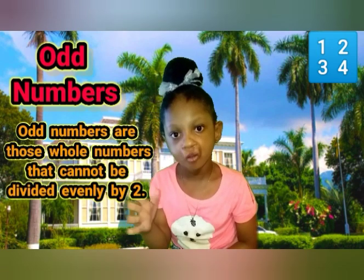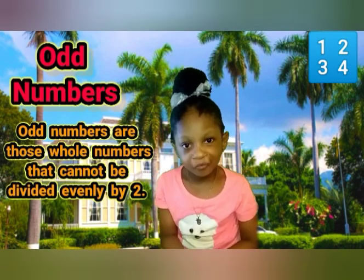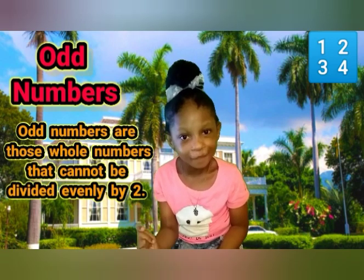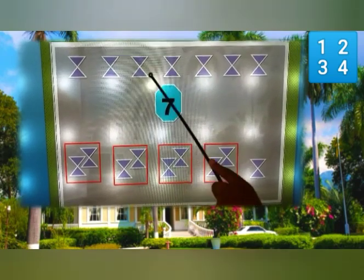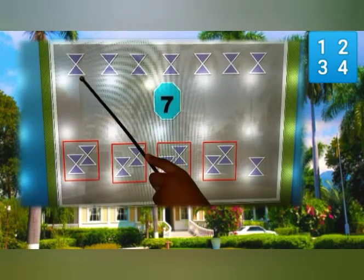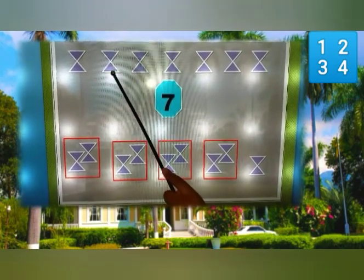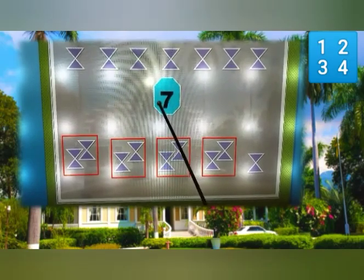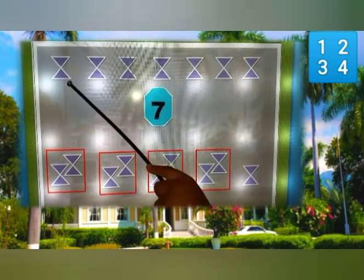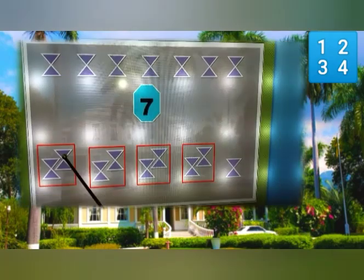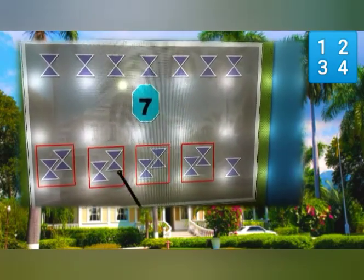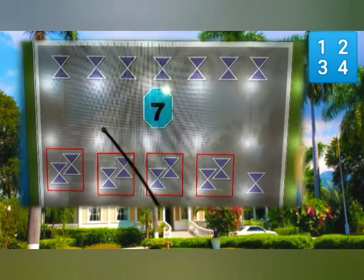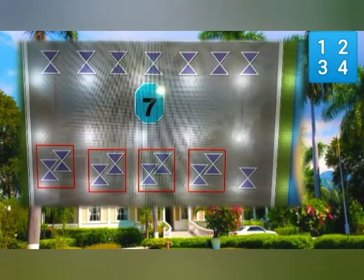Odd numbers are those numbers that cannot be divided evenly by two. Let's look at two examples. Here we have some eggs. Let's count them — one, two, three, four, five, six, seven. There are seven. Now we are going to divide them evenly by two. We get groups of two, but we have one left. So this shows that seven is an odd number.